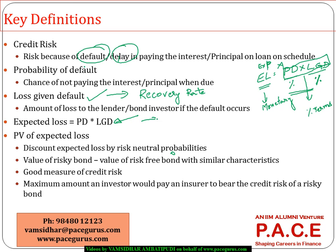What people understand is that expected loss will be different for different states of the economy. If the economy is in a boom phase, the chances of default are much lesser. And because asset values will go up, whatever has been set as collateral also increases in value, so the loss given default will come down because the recovery rate could be much higher. So expected loss will be much lesser during a booming economy compared to a recessionary period. The expected loss is expected to change with the state of the economy.